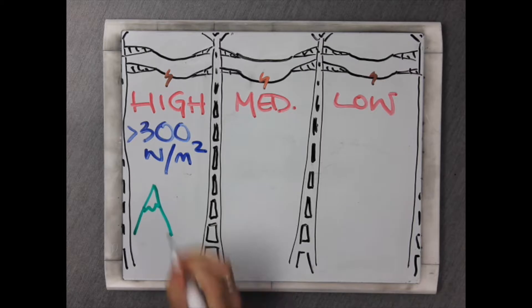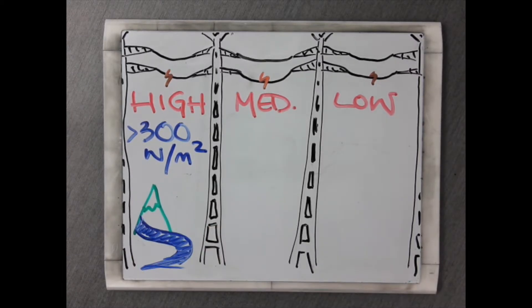High energy systems have an energy of more than 300 watts per meter squared. This happens mainly in valleys with a high slope and confined or partly confined valleys.